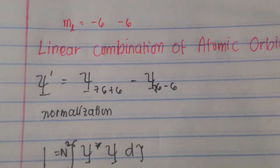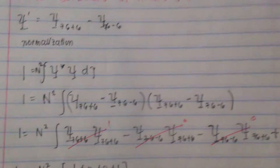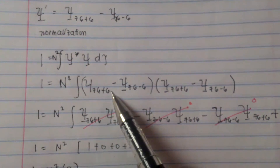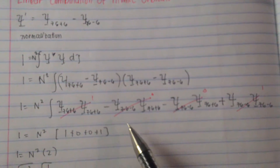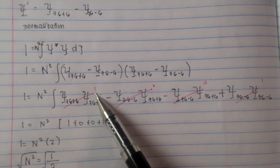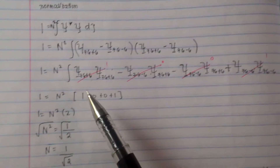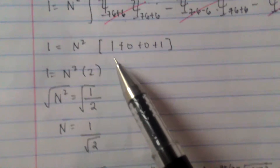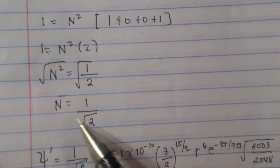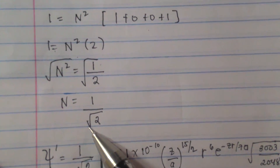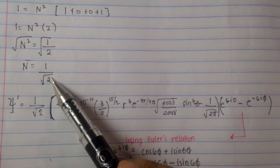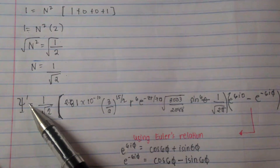Since the ml given is negative 6, and using the linear combination of atomic orbitals (LCAO), we use the equation for psi prime. We apply normalization to solve for N squared: expanding gives psi₇₆₋₆ times psi₇₆₋₆ and so on. Using the Kronecker delta, this gives 1, 0, 0, 1, so the result is 1 equals N squared times 2. Solving for N gives N equals 1 over the square root of 2.